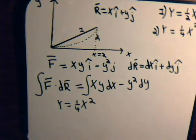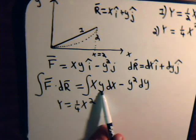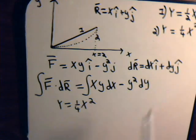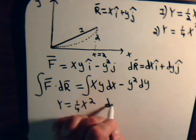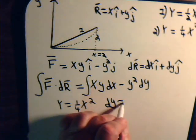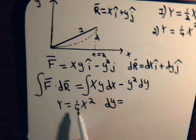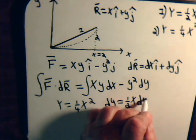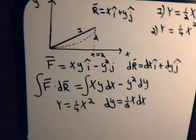And we want to integrate this where y equals one-fourth x squared. So, for y, we can substitute this in and we can also substitute this in because we can find out what dy is. dy, that's just going to be one-half x dx. So again, we can express everything in a single variable. We expressed it with respect to x.